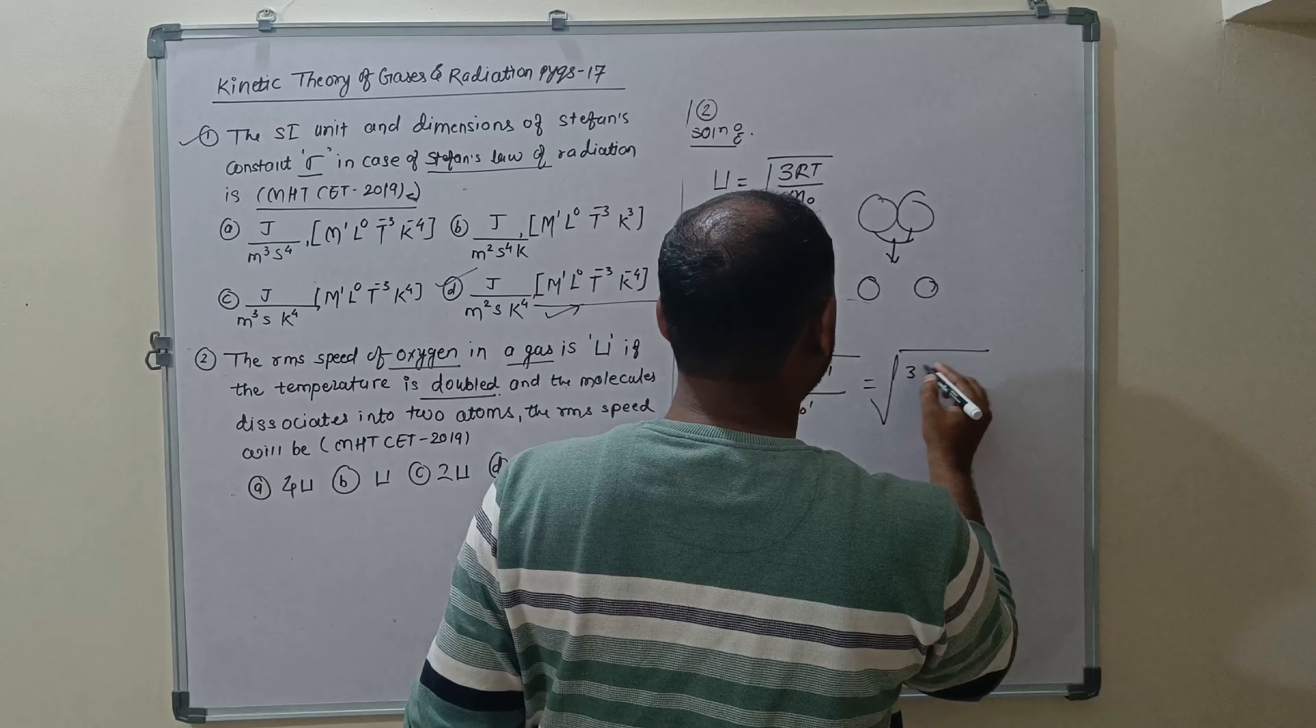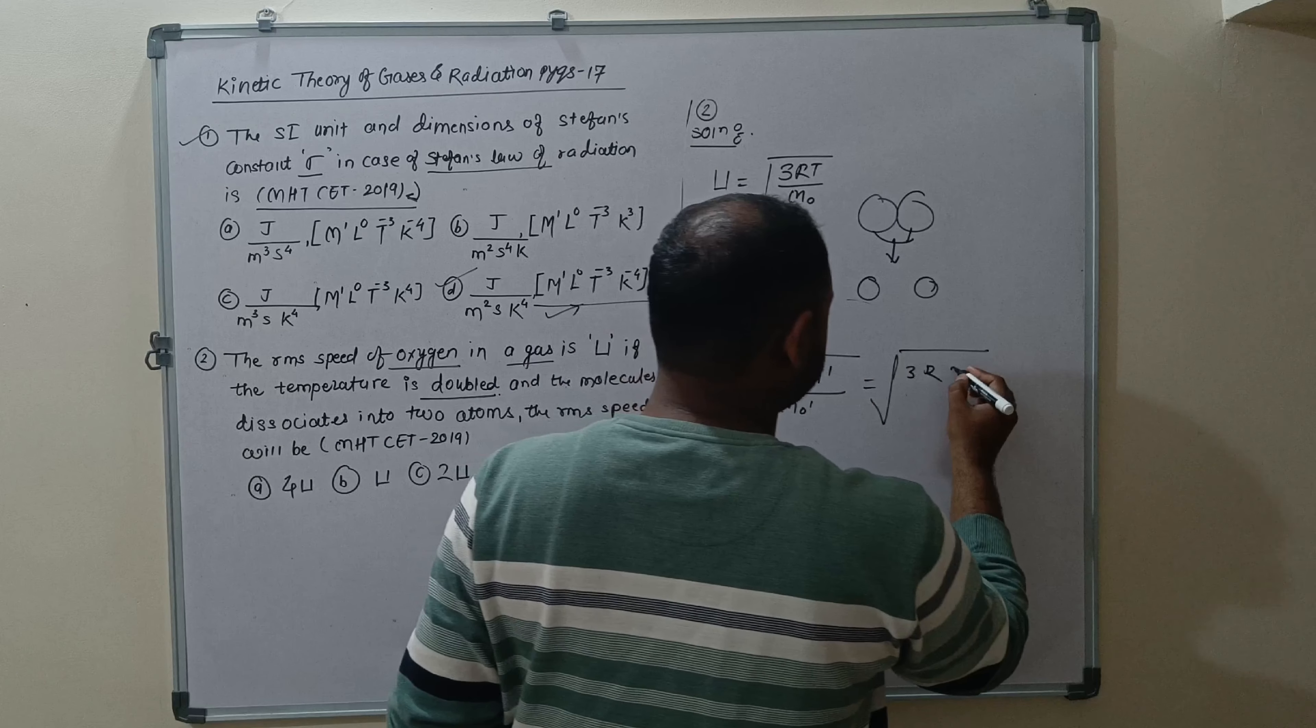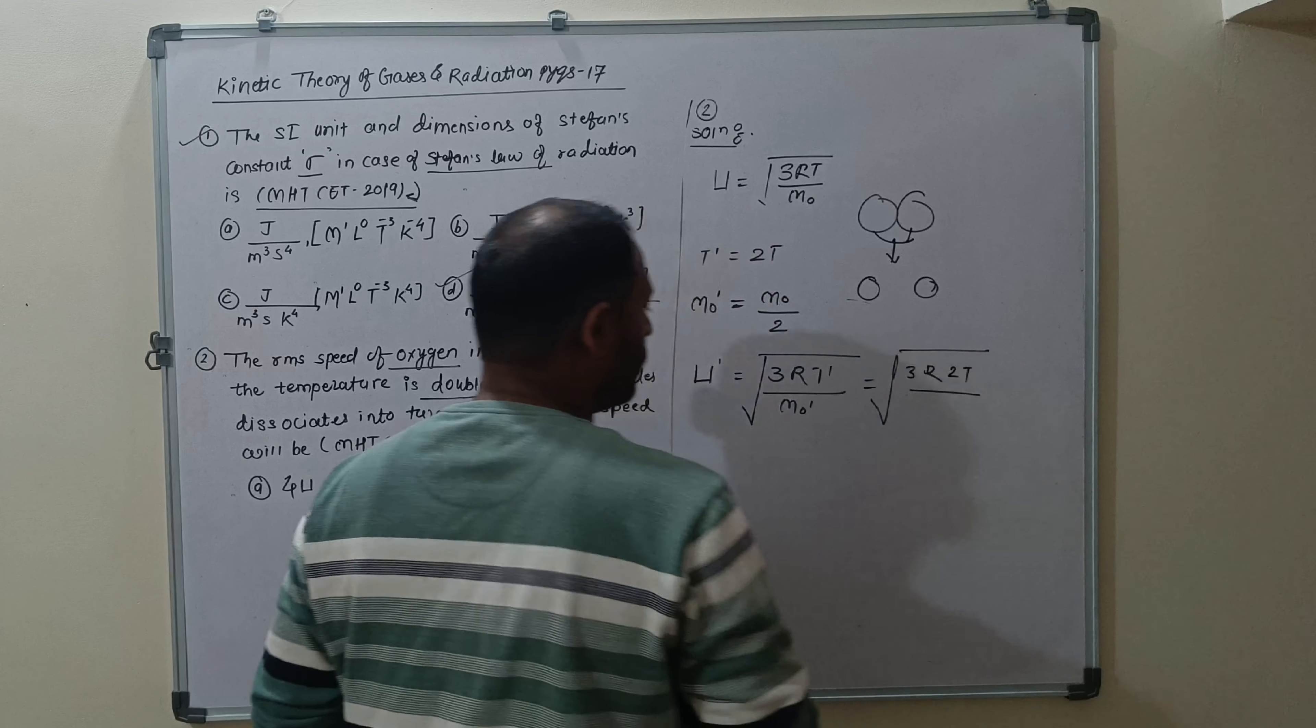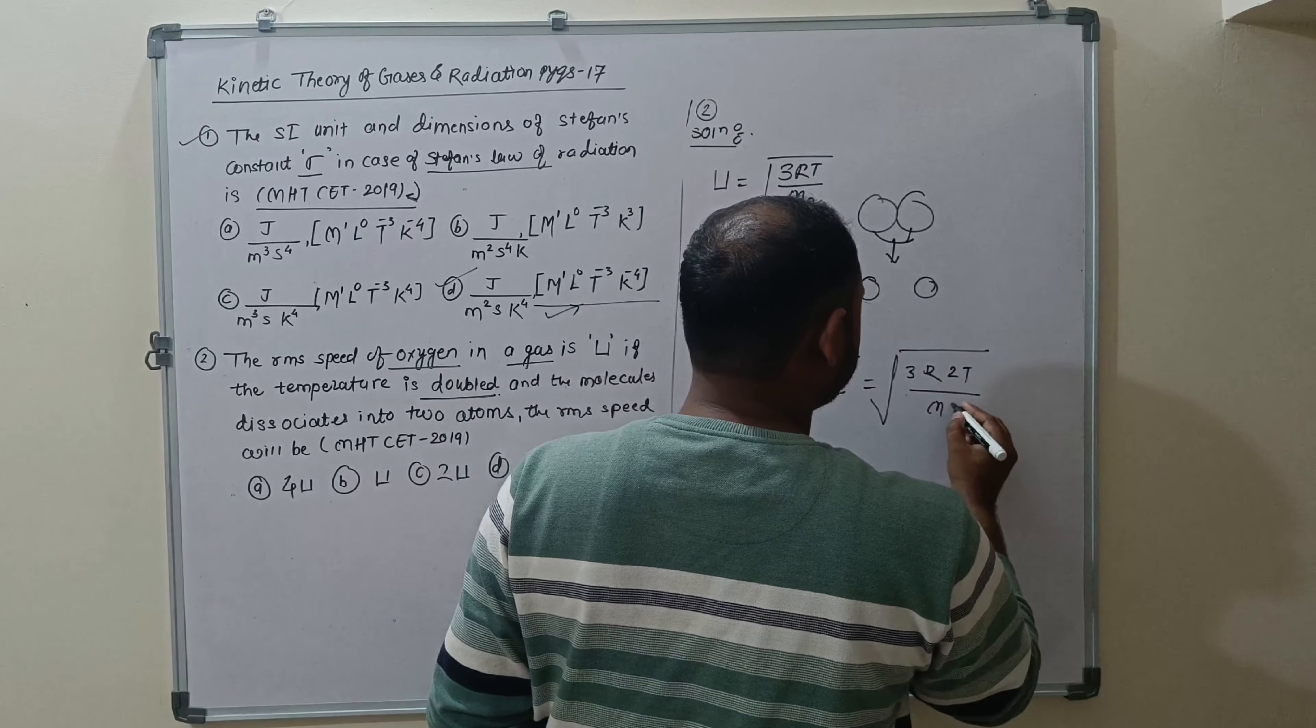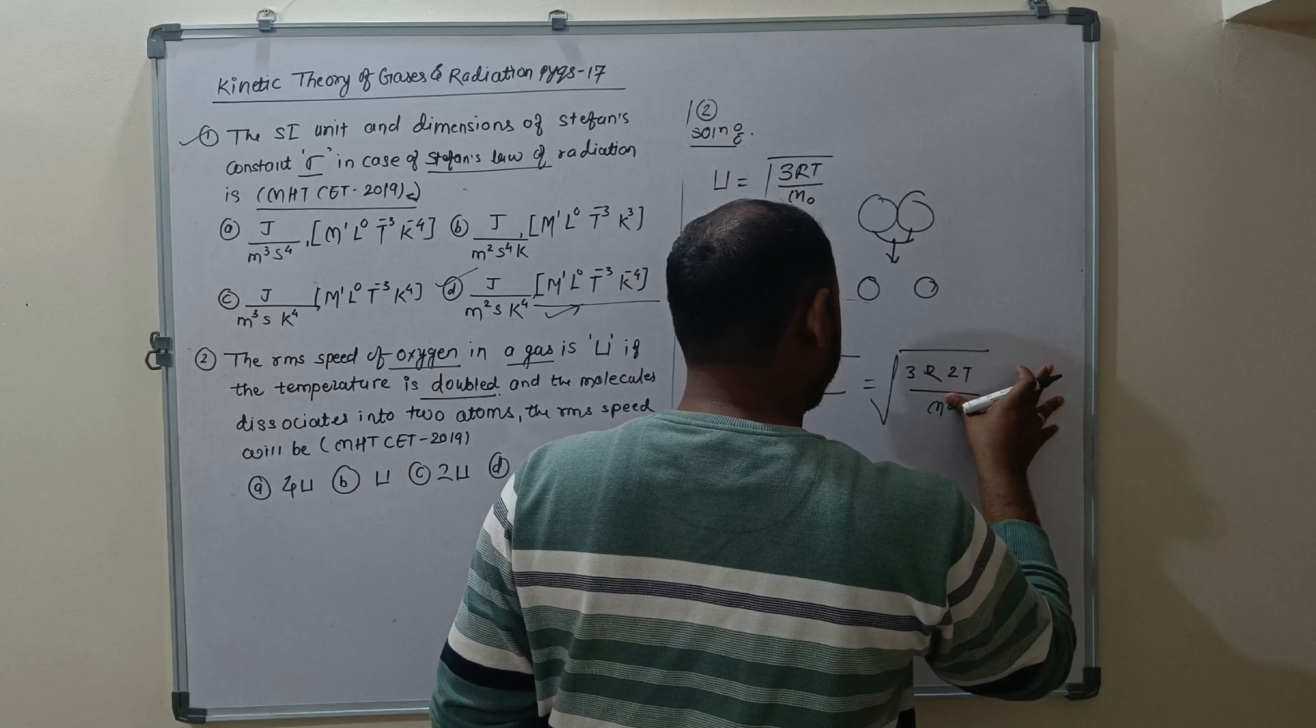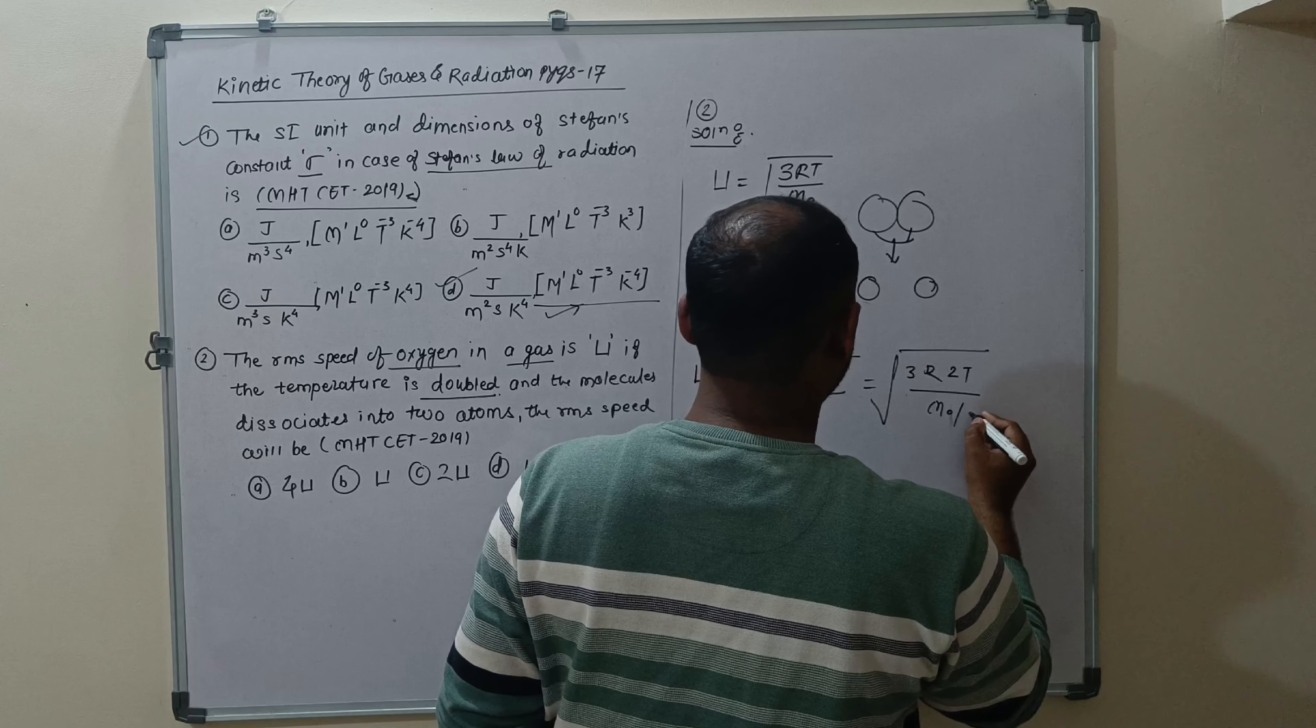So you can get the new RMS velocity. Therefore square root of 3R, what is T prime? That is 2 times T. What is M not prime? M not divided by 2.